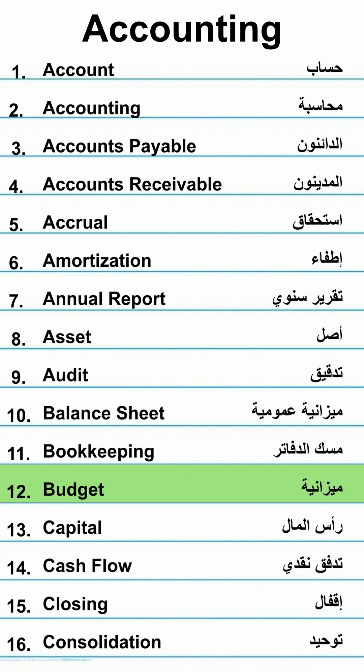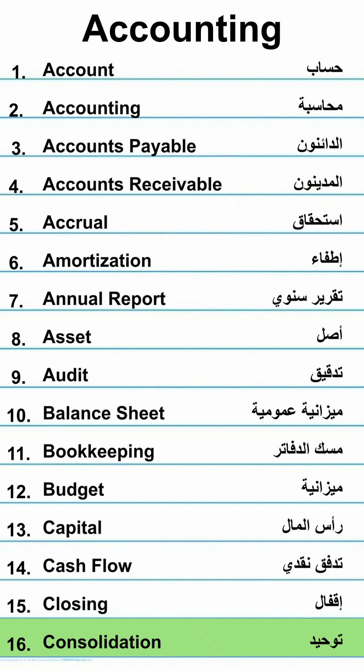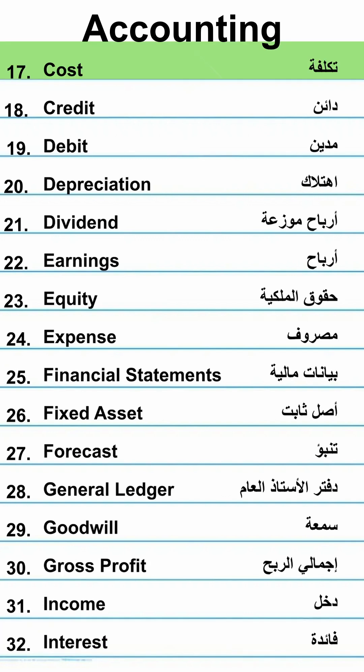Budget — Meezanee. Capital — Ratsilmal. Cash flow — Tadfuk Nagdi. Closing — Iqfal. Consolidation — Tauhid. Cost — Teklufa.